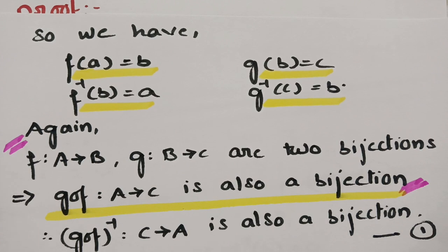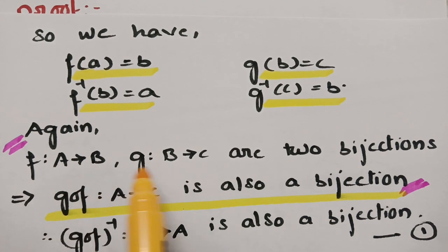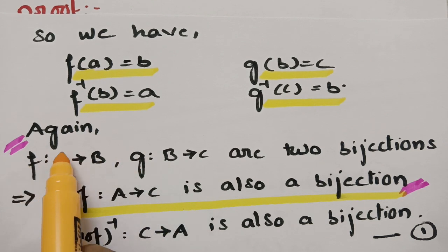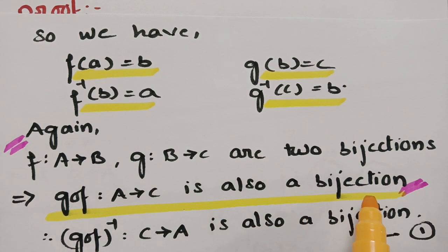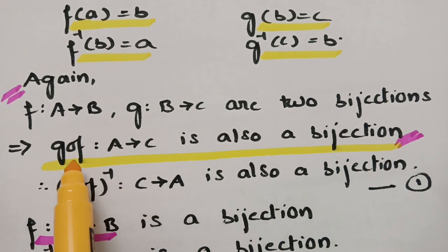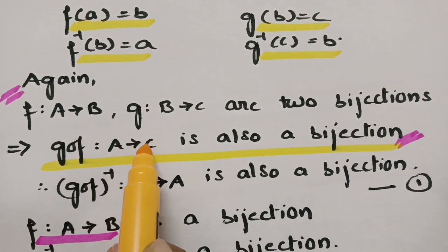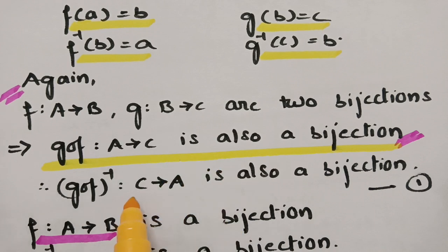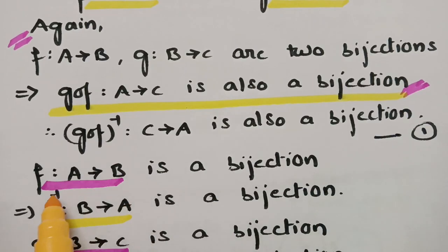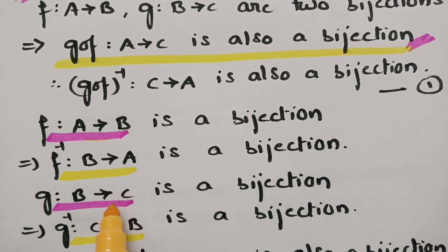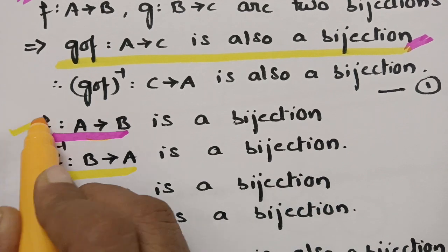There is an important theorem from a previous video: if F maps from A to B and G maps from B to C are two bijections, then the composition G circle F maps from A to C is also a bijection. Therefore, G circle F whole inverse maps from C to A is also a bijection. Similarly, F inverse maps from B to A is a bijection, and G inverse maps from C to B is a bijection.